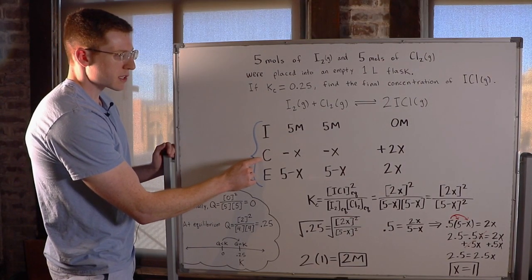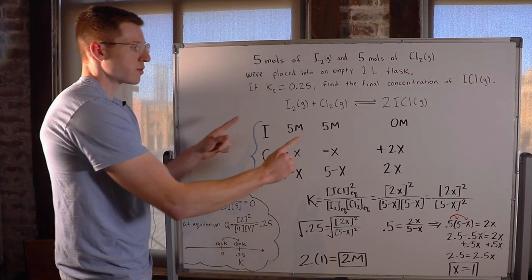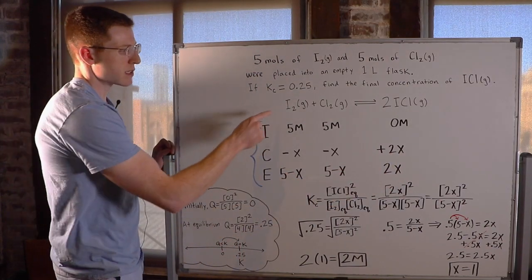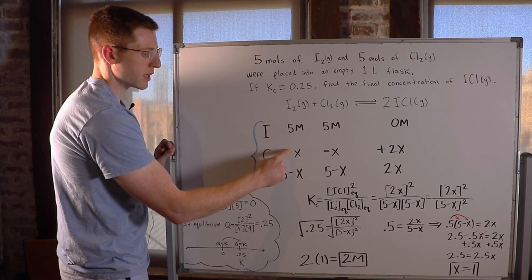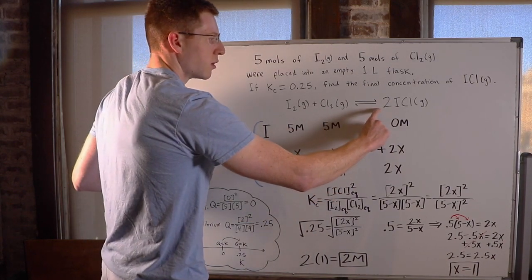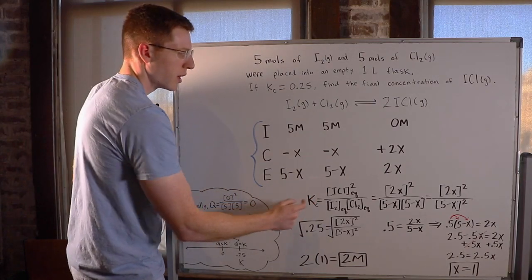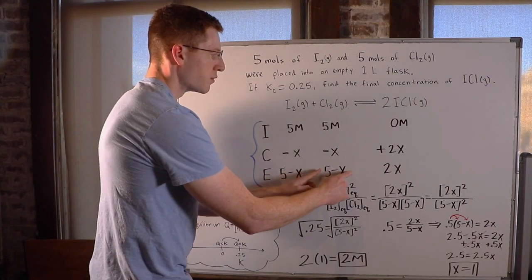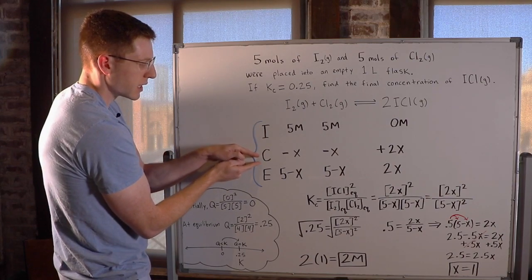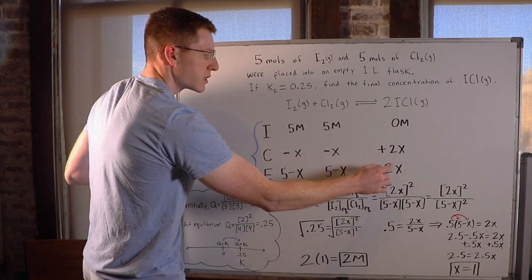C stands for Change. In this row we use variables, typically X. Our reactants are going to have negative X values, while our product has positive X values. Since there's a coefficient of 1 in front of I₂, it's minus X; likewise for Cl₂, it's minus X. Since there's a coefficient of 2 in front of ICl, it's plus 2X. The Equilibrium row is simply I plus C: 5 minus X, 5 minus X, and 2X.